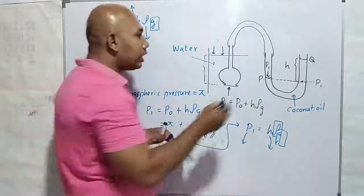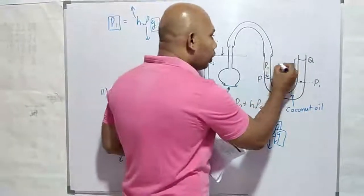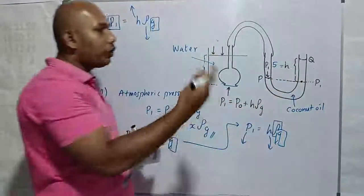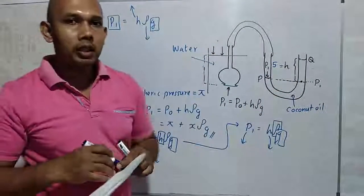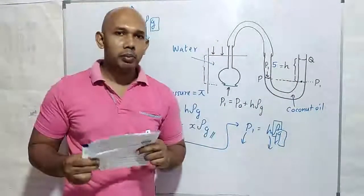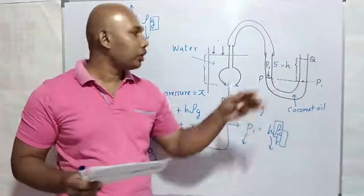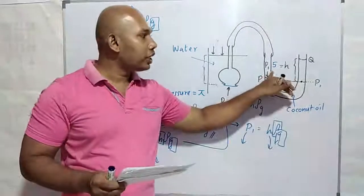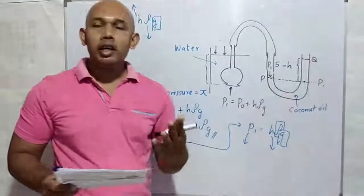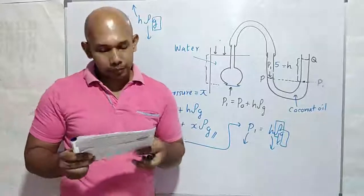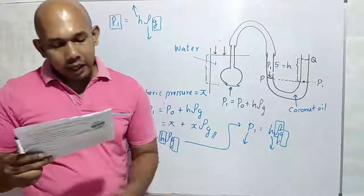For example, if H was originally 5 cm, it will now be greater than 5 cm — say 7 cm. So the value of H will be greater than the earlier value.